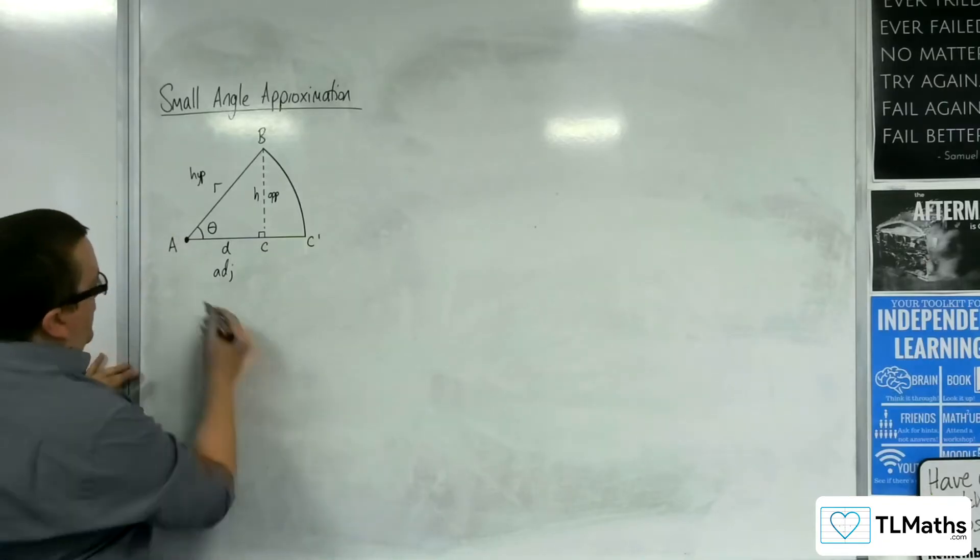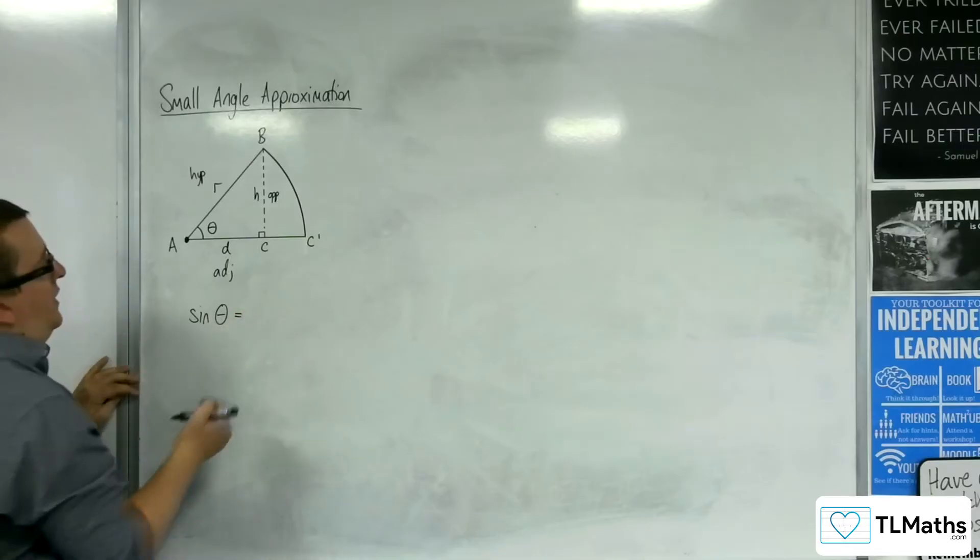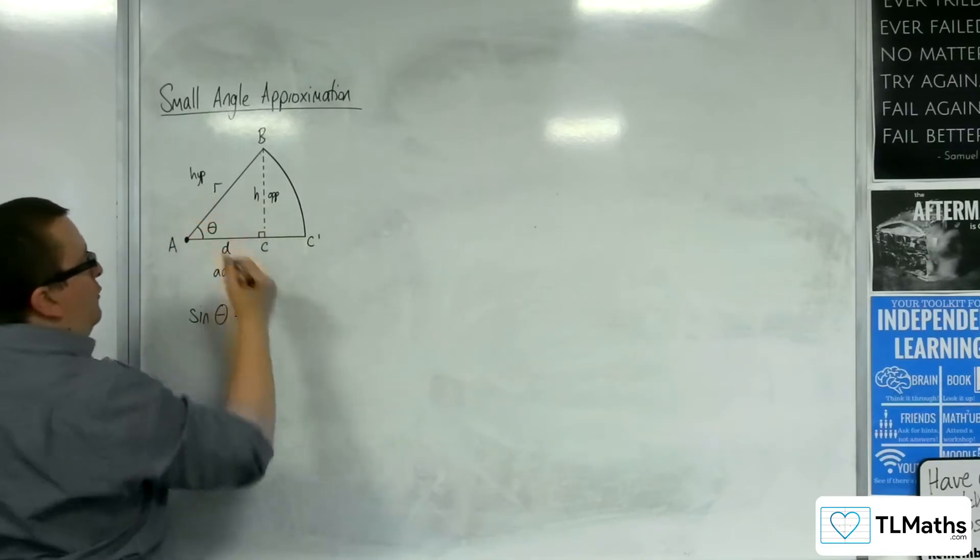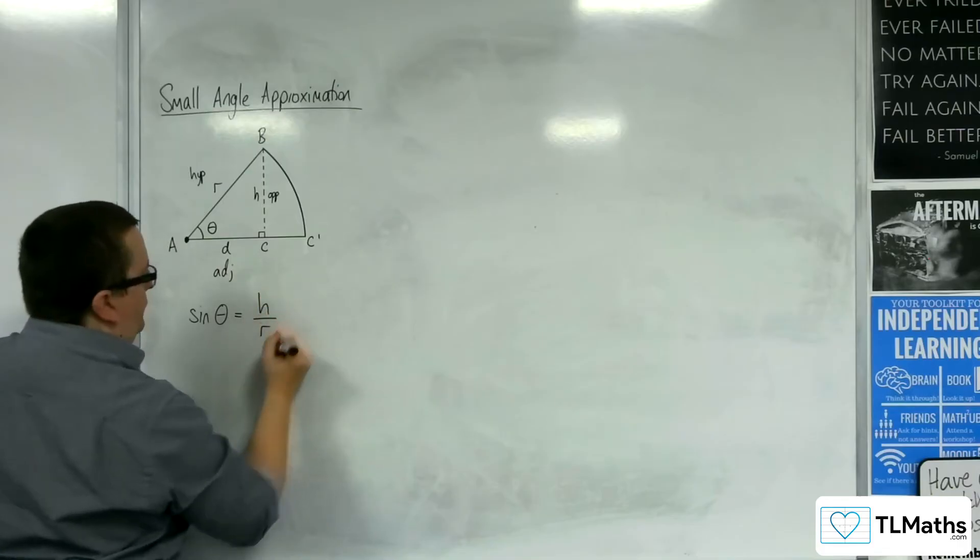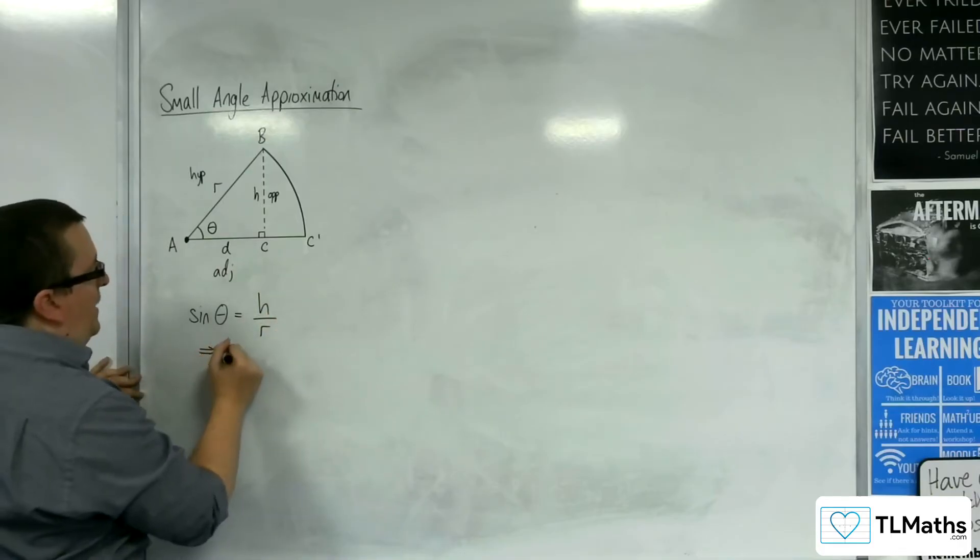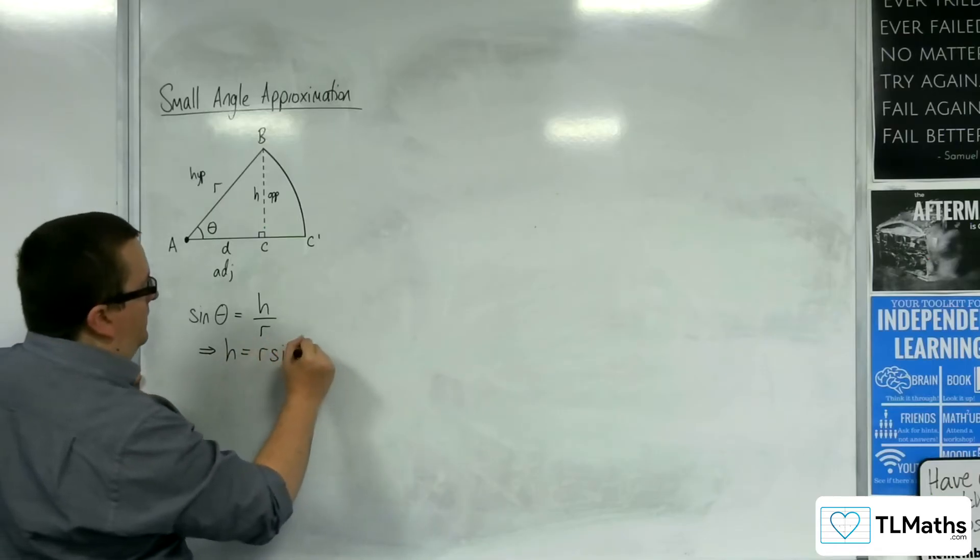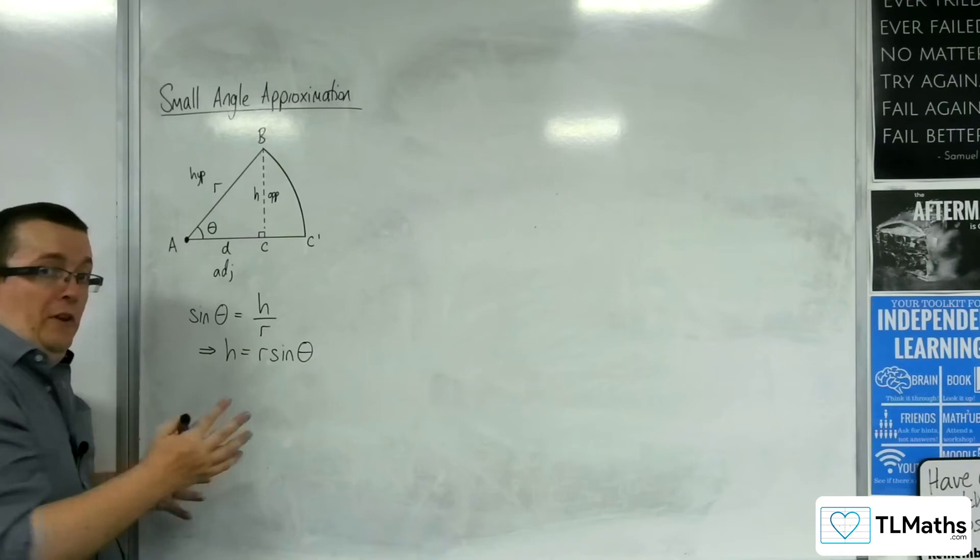So I would be able to say that sine of the angle, theta, is equal to the opposite over the hypotenuse, so H over R. The consequence of that is that I would be able to write that length H in terms of R and theta. So H is R sine theta.